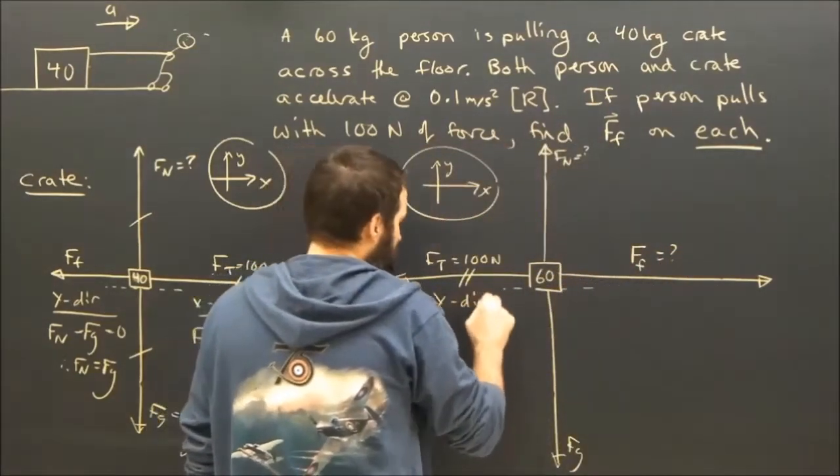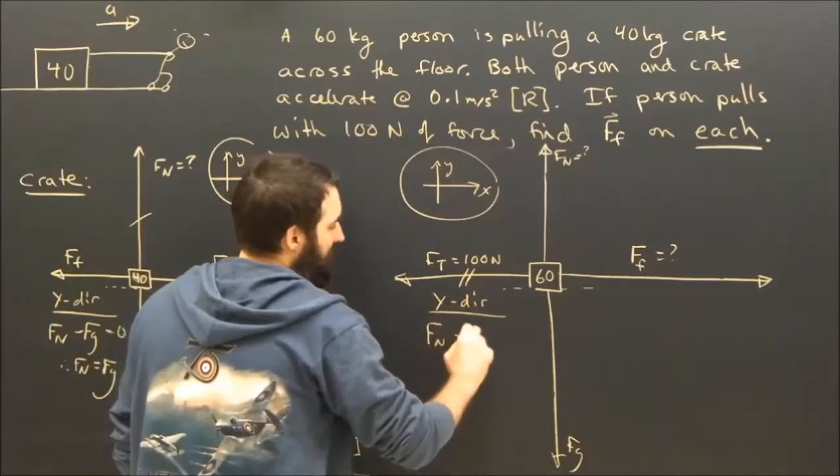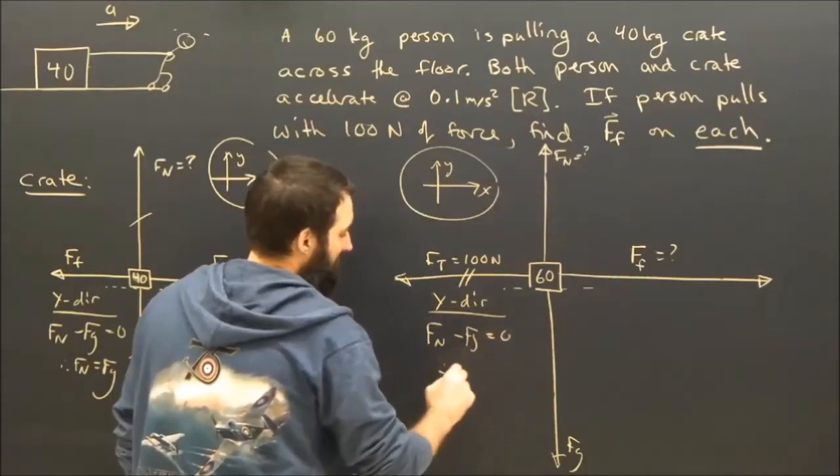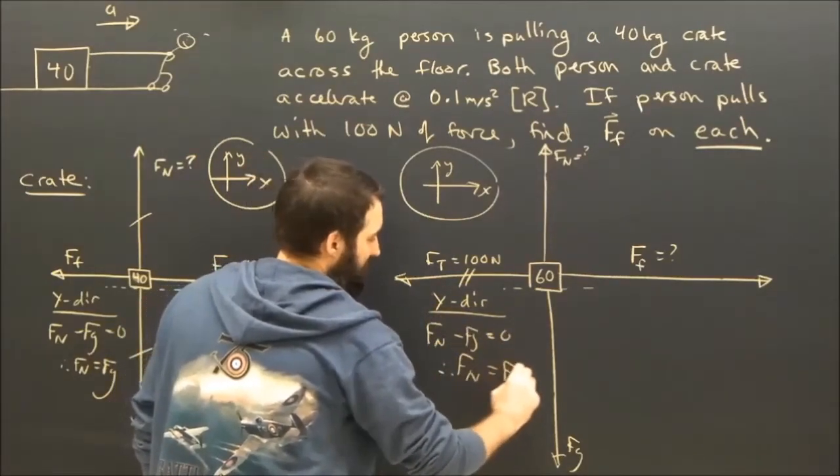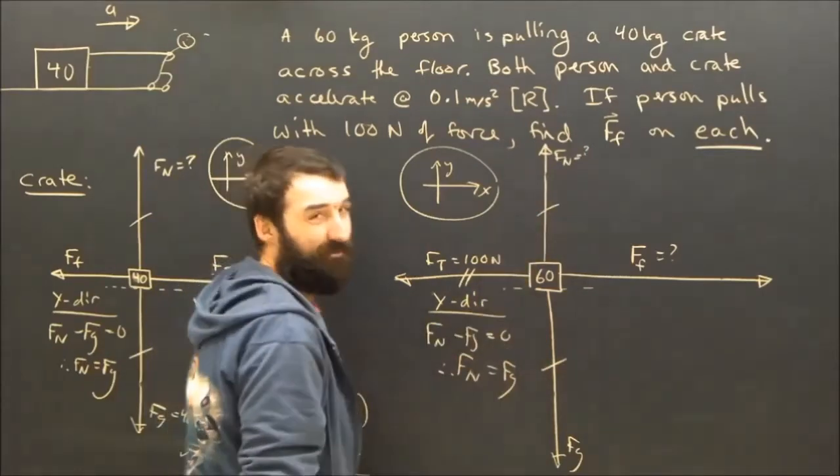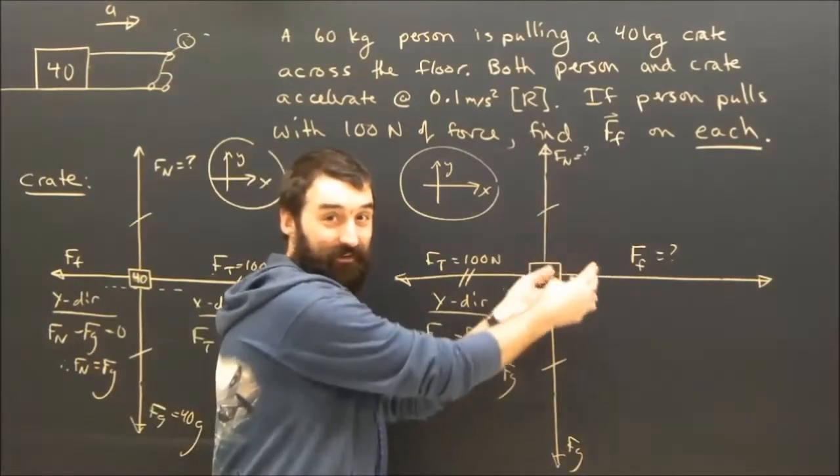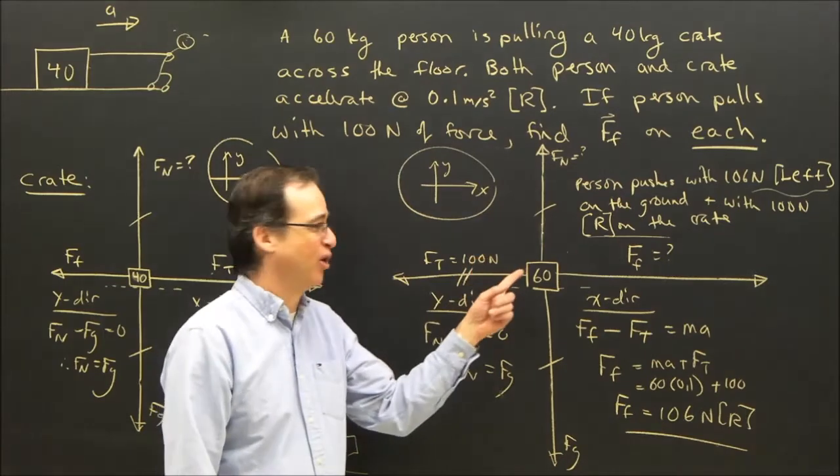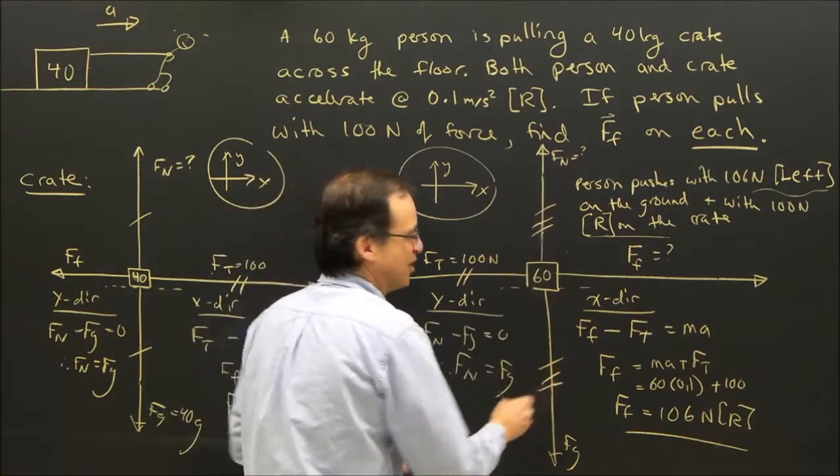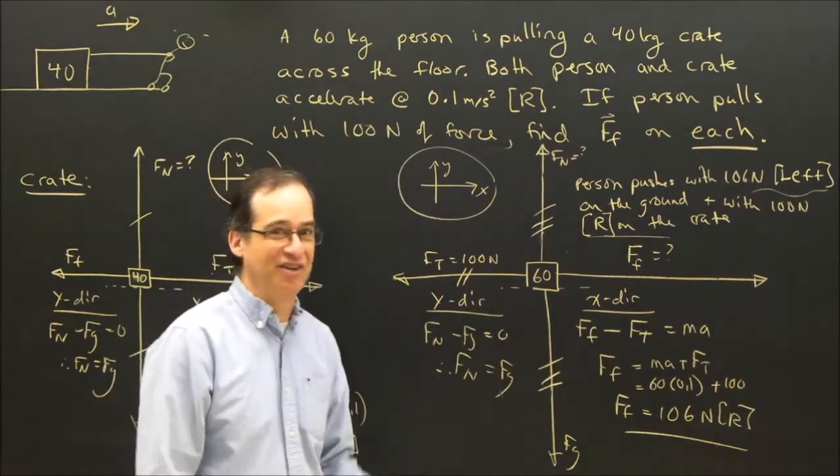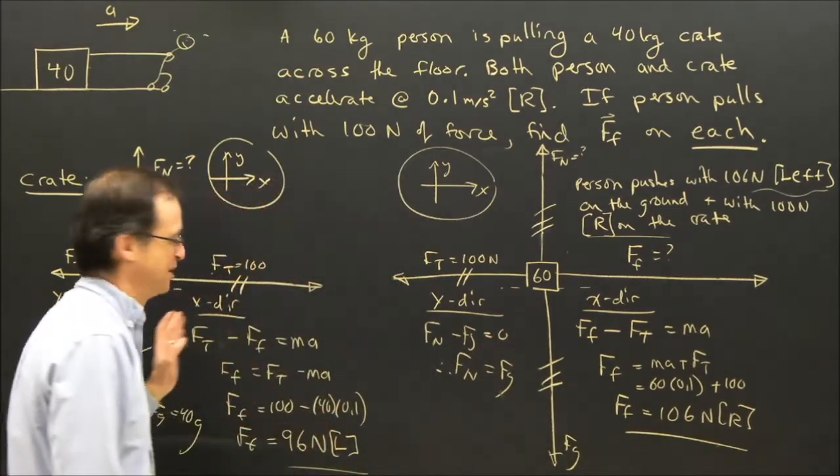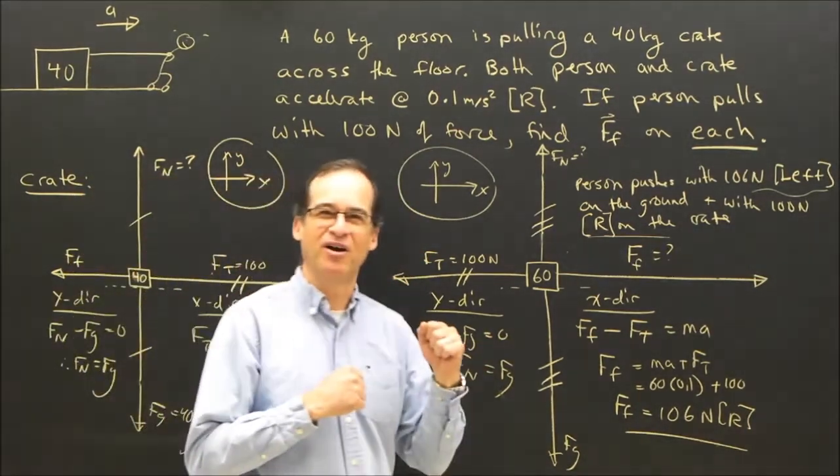Do I need to do the y direction? No, not really, but Fn minus Fg is equal to zero, therefore Fn equals Fg. Okay, no problem. In grade 12, we'll use that equation to find Fn. I think we need more subscripts, because I wouldn't want my teacher to think that I thought that the weight of this was the same as the weight of this.